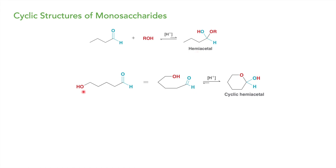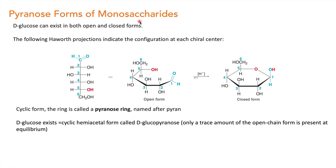So what happens if a hydroxyl group and an aldehyde group are present in the same molecule? The oxygen will attack this carbon and give you a cyclic hemiacetal form. You will get this cyclic hemiacetal in the presence of acid. So now we will study the cyclic form present in monosaccharides.